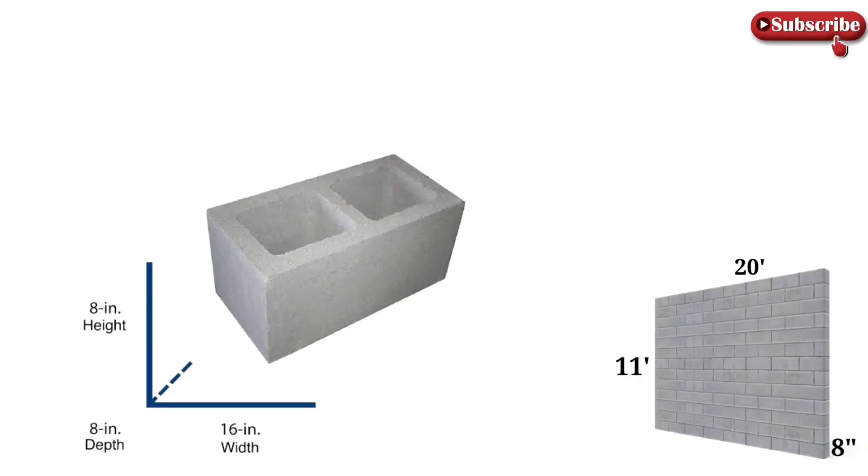We have a wall which is 20 feet long, 11 feet in height, and 8 inches in thickness. Now we have all dimensions in feet. We cannot multiply feet from inches, so we convert the dimensions. If we divide 8 inches by 12, it gives 0.666, which is approximately 0.67 feet.